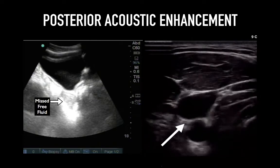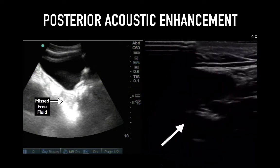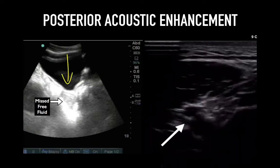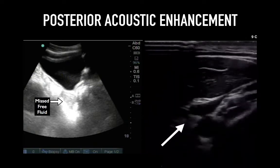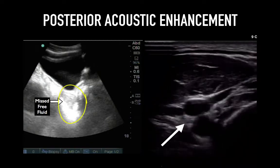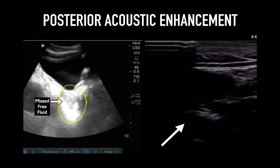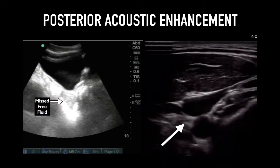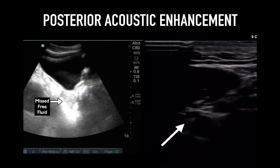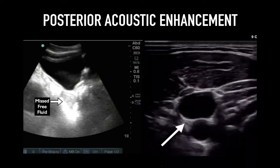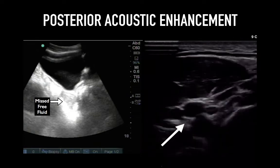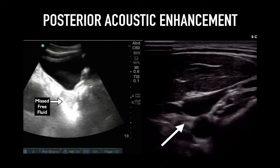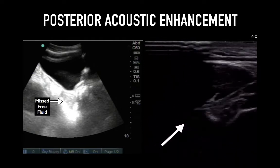Posterior acoustic enhancement: as we covered previously, sound waves propagate through fluid with minimal attenuation and reflection — hence they are anechoic. We see increased transmission through fluid and increased artifactual brightness deep to the anechoic structure. Waves that pass via fluid-containing structures are less attenuated than waves passing through adjacent tissue, resulting in increased energy returning to the transducer and increased echogenicity with reference to surrounding tissue. Posterior acoustic enhancement is a telltale sign that can distinguish cysts and fluid collections from solid masses in the body.